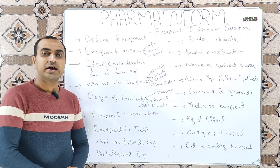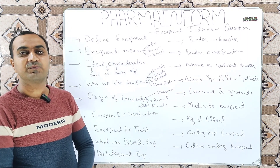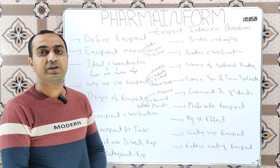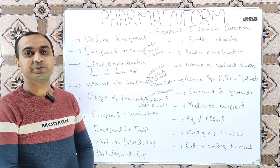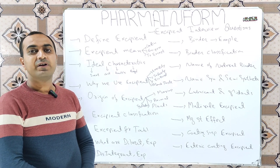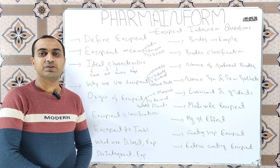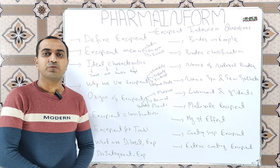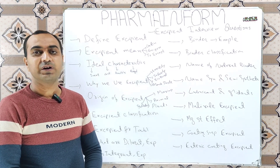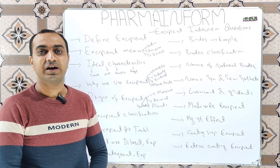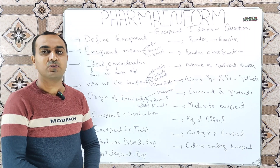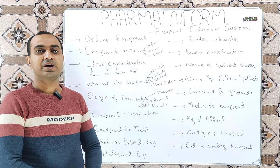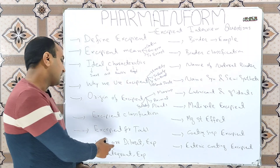What are diluents? Diluents are also known as bulking agents. If you want to learn more about diluents, the link of the video is given in the description. Diluents or bulking agents are excipients used to enhance the bulk of the dosage form. Examples of diluents are lactose, starch, microcrystalline cellulose, and dextrose.